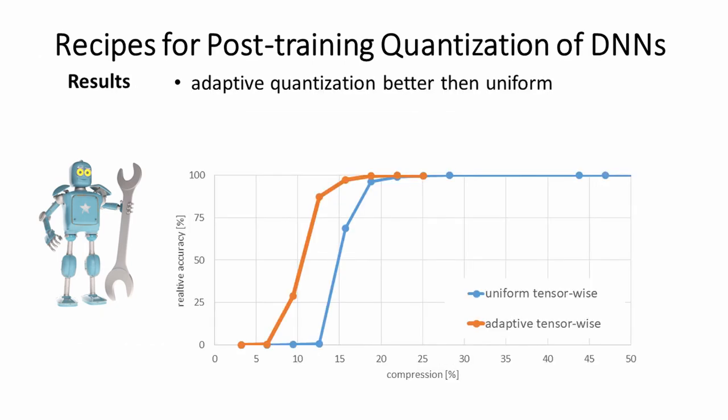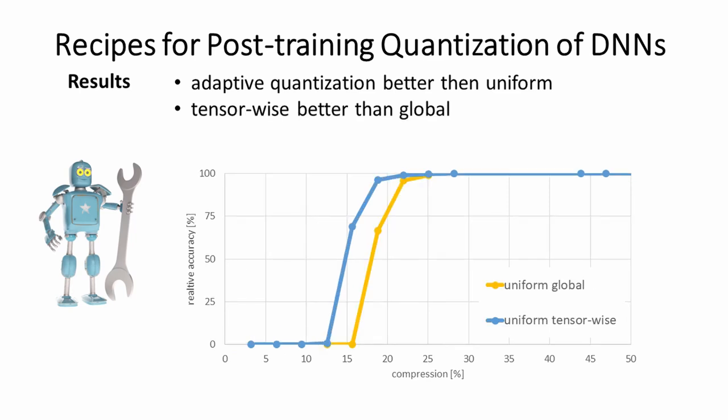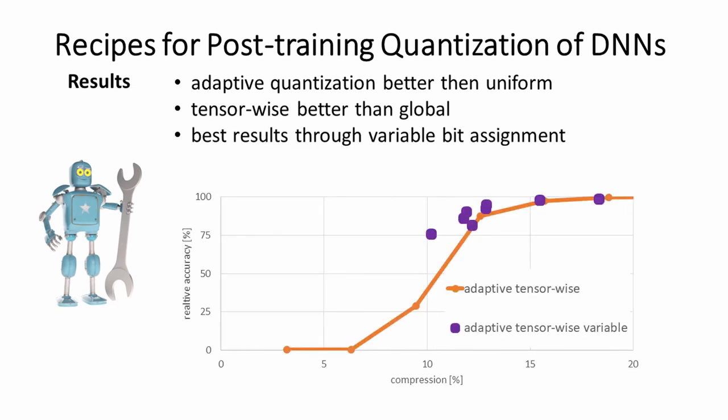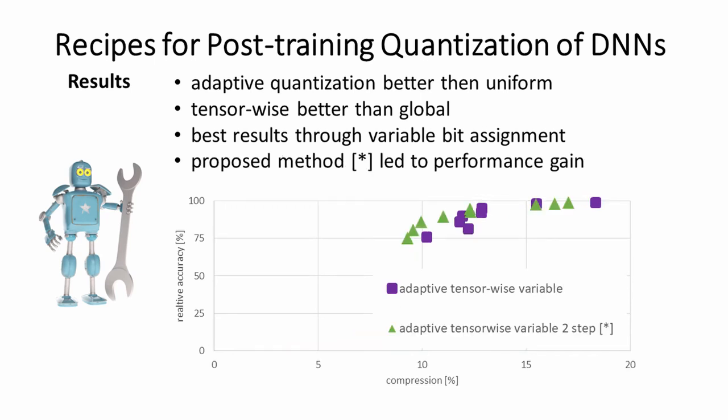Our results show that adaptive quantization performs better than uniform, and tensor-wise quantization works better than global. The best results are achieved through variable bit assignments, and the proposed methods led to a performance gain over the one-step greedy approach.